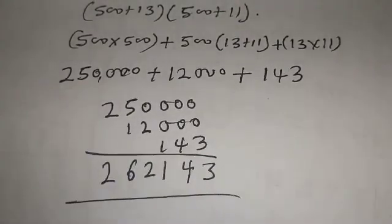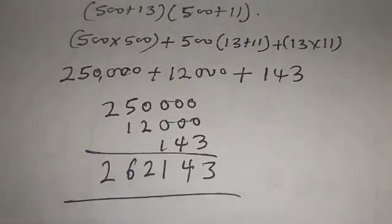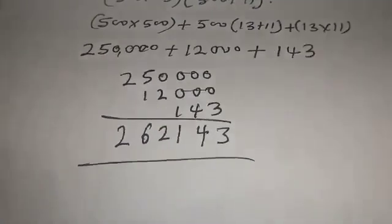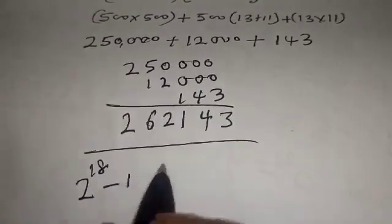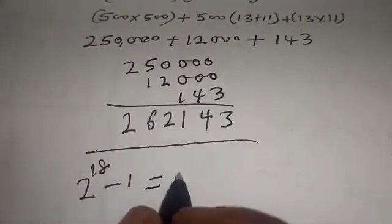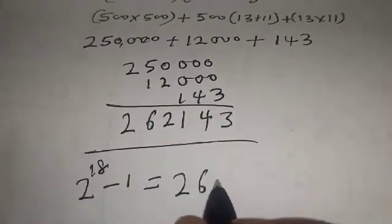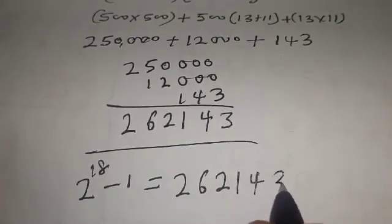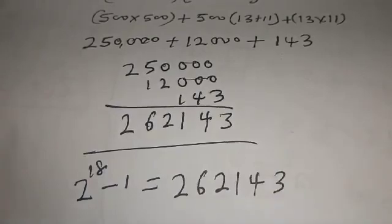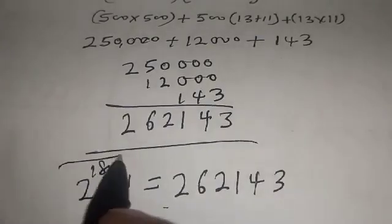So our final answer is 2 to the power 18 minus 1 without using calculator is equal to 262,143. That is our final answer.